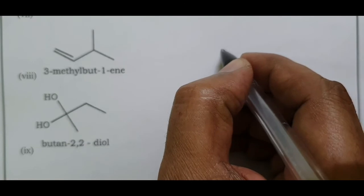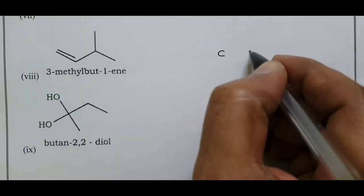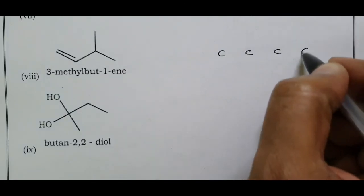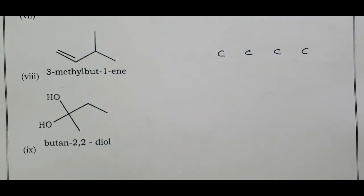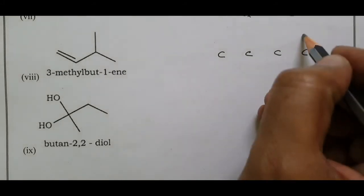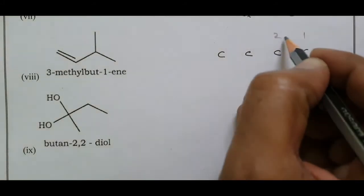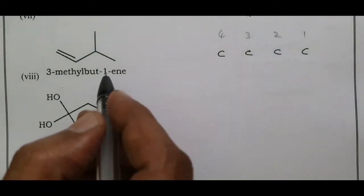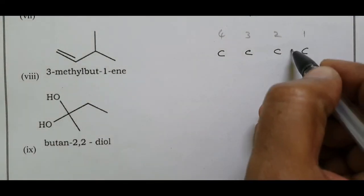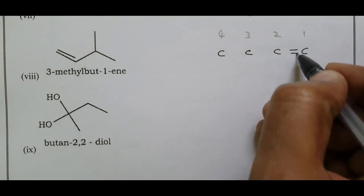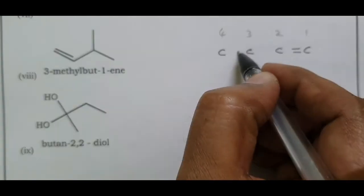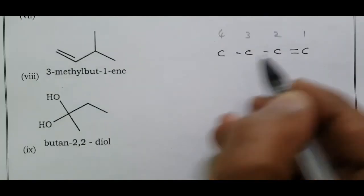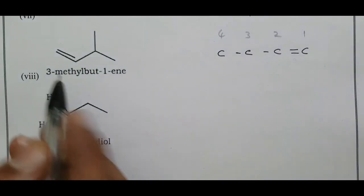3-methylbutane — butane has four carbons, numbered 1, 2, 3, 4. Number from left to right: 1, 2, 3, 4. The third carbon has a methyl substituent. That is the three-carbon branch.